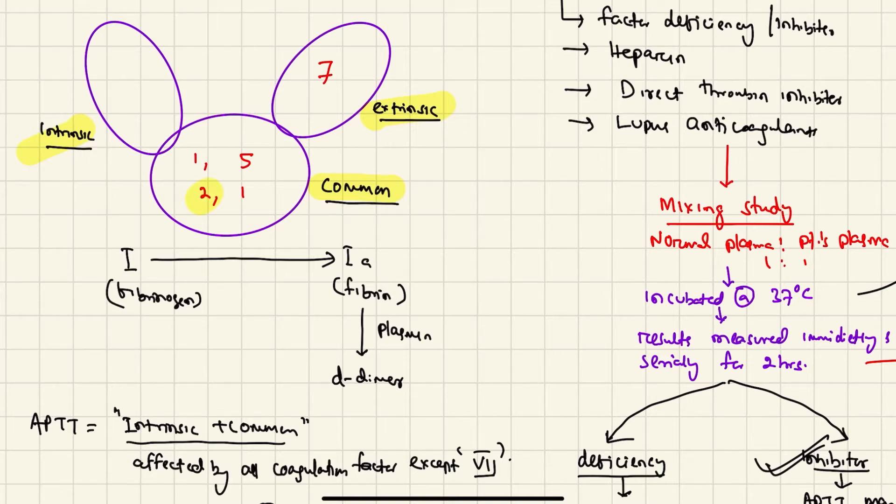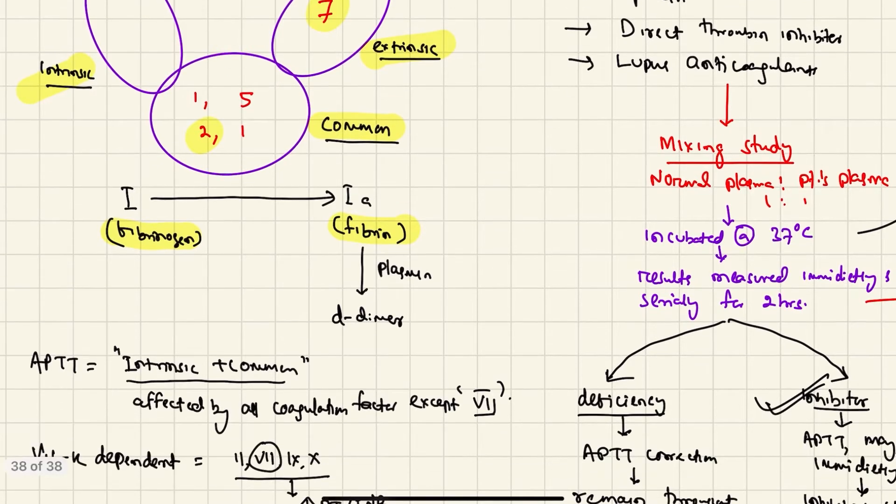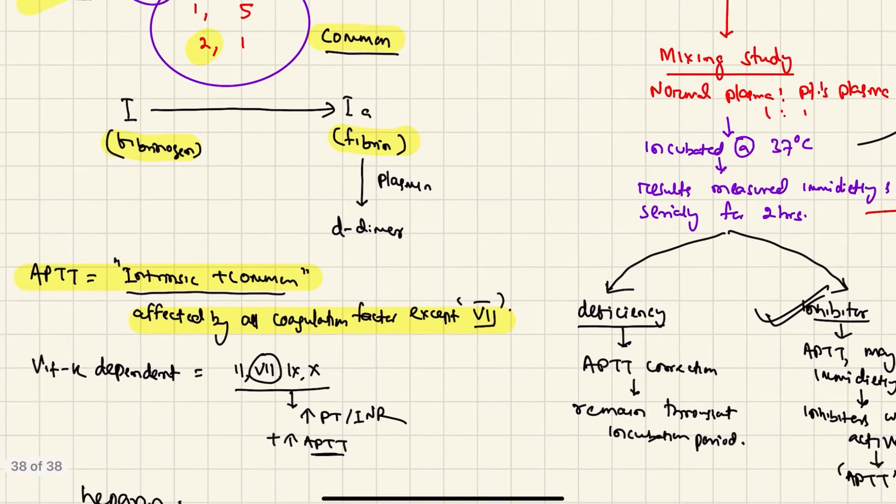We have two systems: intrinsic system, extrinsic system, and a common pathway. The common pathway's purpose is to activate factor 2, which will convert fibrinogen into fibrin. Factor 7 is specific to the extrinsic pathway. So aPTT will measure the intrinsic and common pathway, affected by all coagulation factors except factor 7.